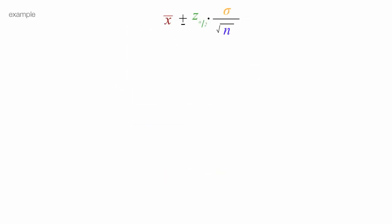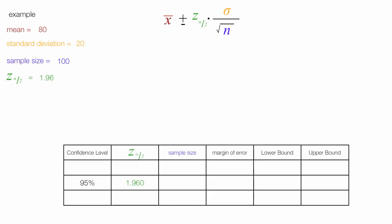So now I'll do an example. The mean is equal to 80, the standard deviation is equal to 20, the sample size is 100, and the confidence coefficient is 1.96. I discuss this in another video.